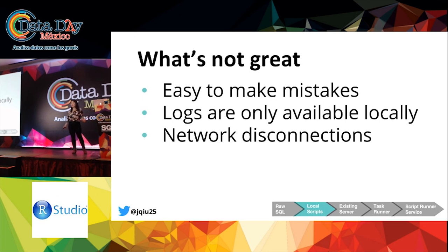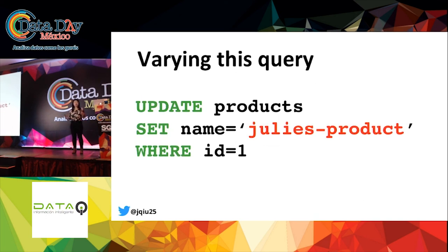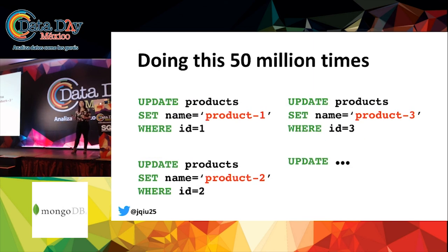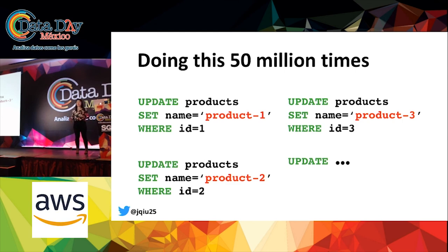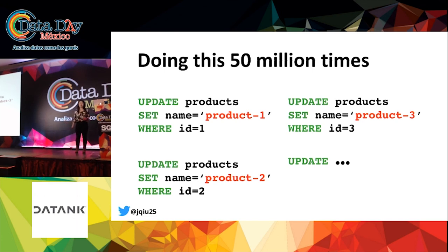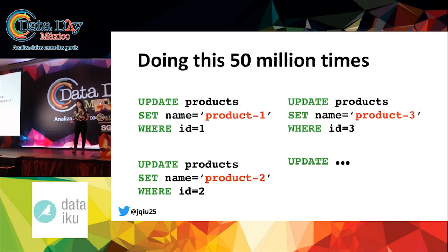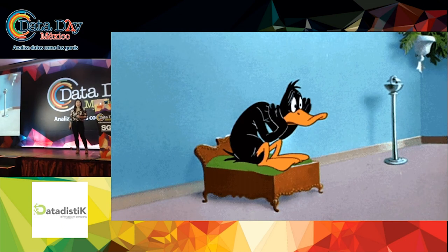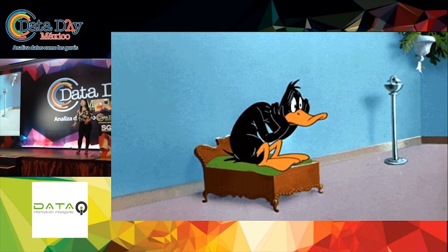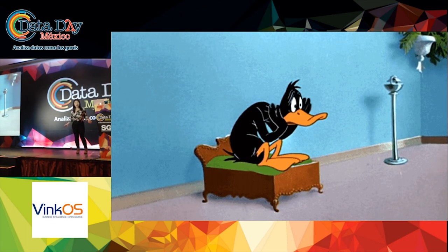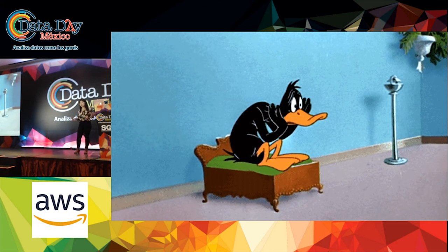What's not great? First, code review isn't strictly enforced — someone can write and run a script without any review right from their laptop. Second, script outputs are only available on the user's machine, so if a mistake happens we can only see logs locally. And lastly, we can run into network connectivity issues — the script will stop if the internet dies or the user closes their laptop. This begs the question: what are we supposed to do if our scripts take a really long time to run? At Spring, we have over 50 million products in our database, and I sometimes need to do data migrations on the entire products table. I found myself coming in early and leaving my laptop open all day.